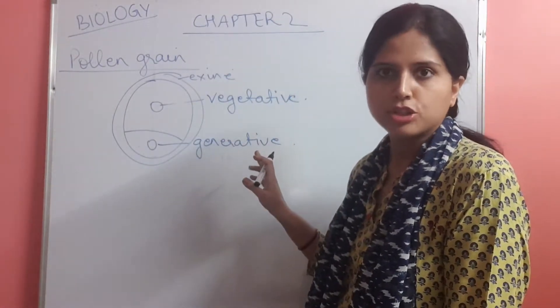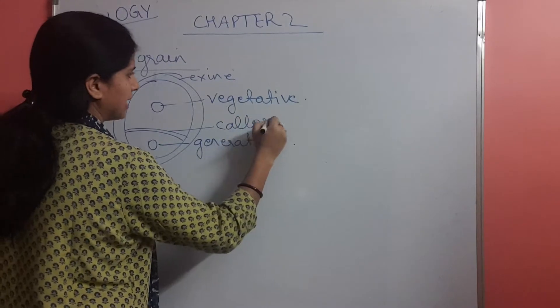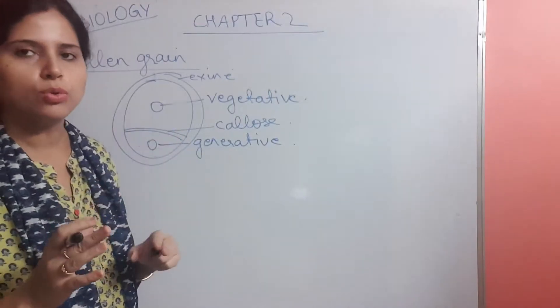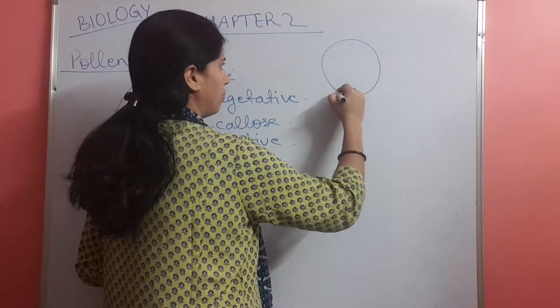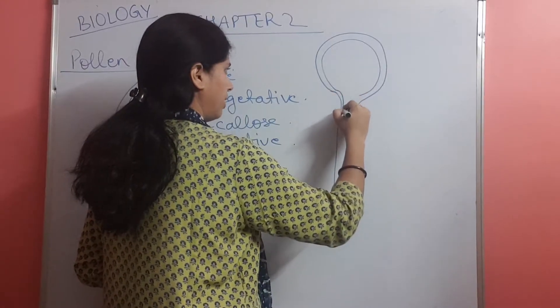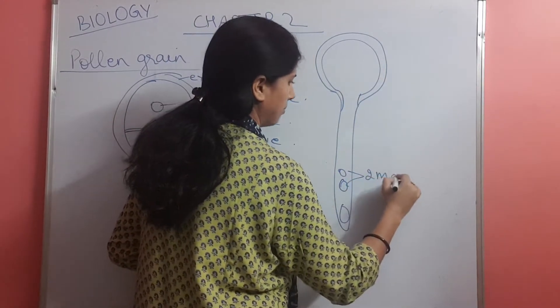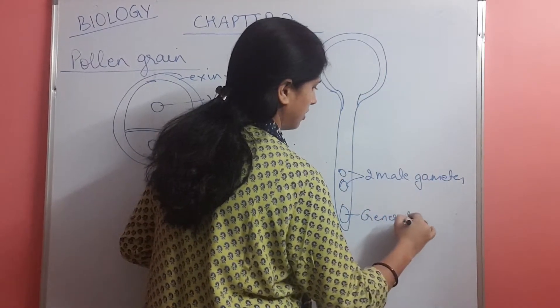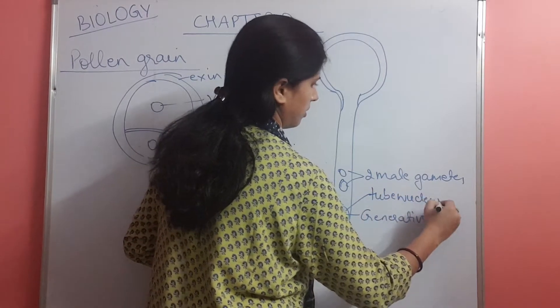And it is separated by a very fine membrane that is called as callose. Now this callose, what happens, is that tube nucleus is going to form. It is going to break and it is going to develop into a tube nucleus, which will form the two male gametes, and it will be the generative cell which is called as the tube nucleus.